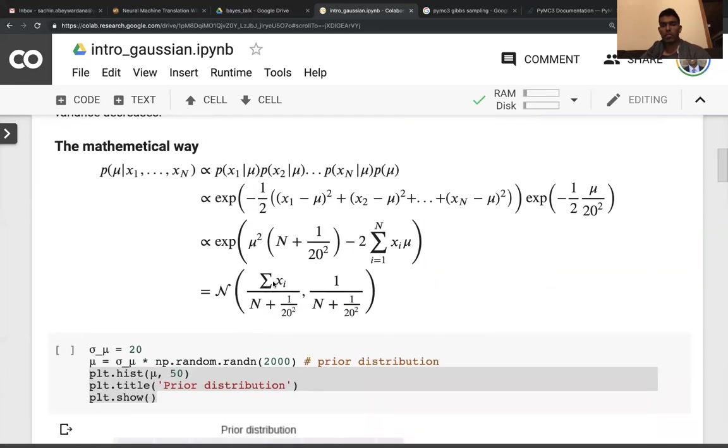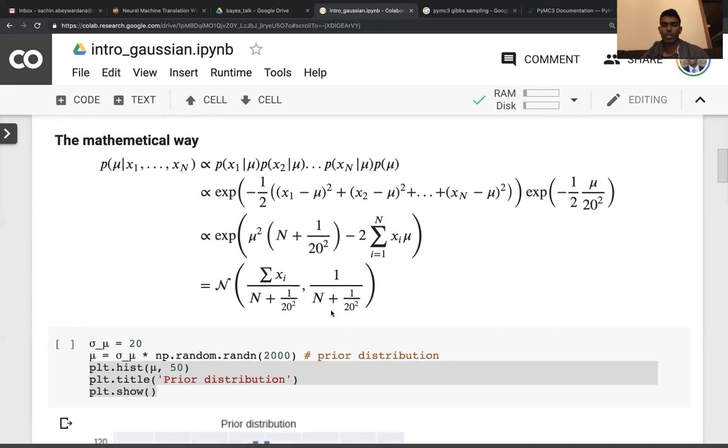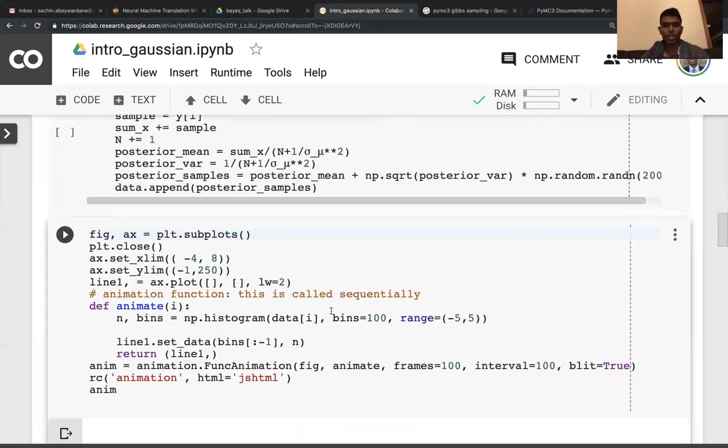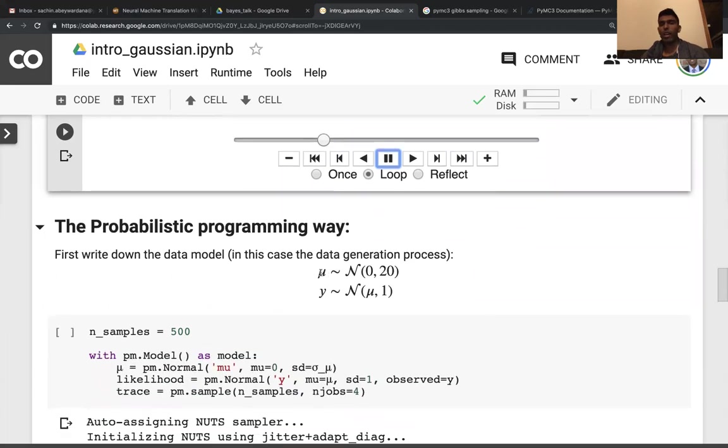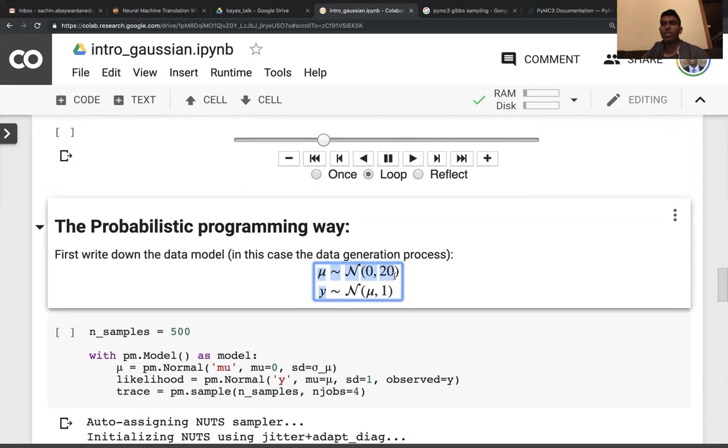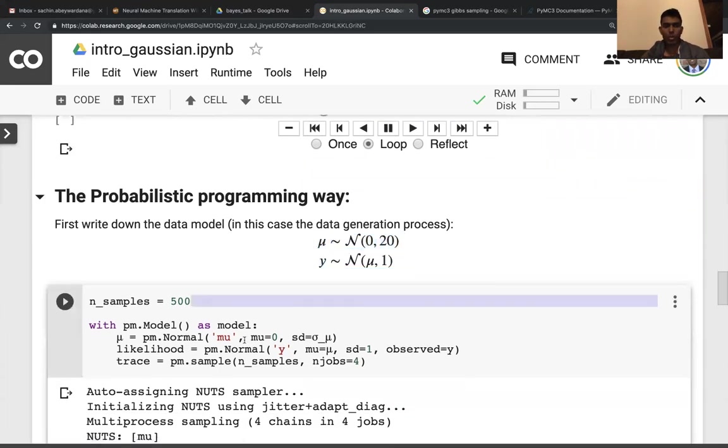That is the mathematical way of doing things. This is really where I wanted you to get to. Now we're going to do the PyMC3 way. The PyMC3 way, all you really had to do is specify how the data is generated. You need to set your priors and your likelihood. What do I mean by that? The prior that I have on my mean is the normal distribution zero twenty.